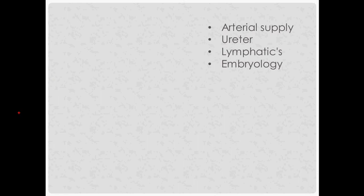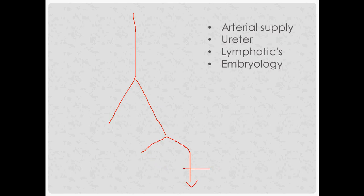The aorta bifurcates into the common iliacs, which divide again into the external and internal iliacs. The external iliac goes along to become the femoral artery after the inguinal ligament. The internal iliac divides into posterior and anterior branches. The anterior branch is what we're concerned with because it supplies the uterus — via the uterine artery — and also gives off the vaginal artery and umbilical artery.